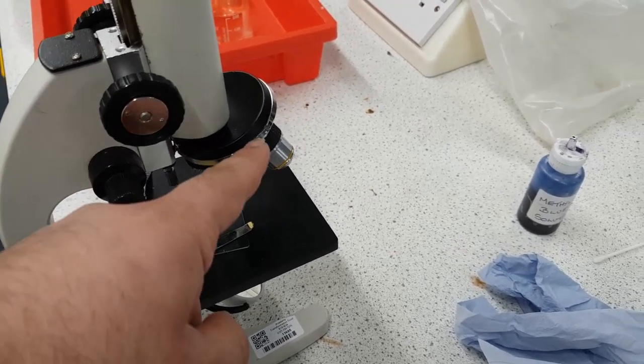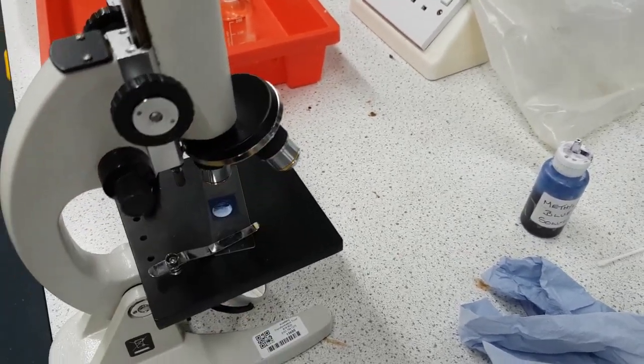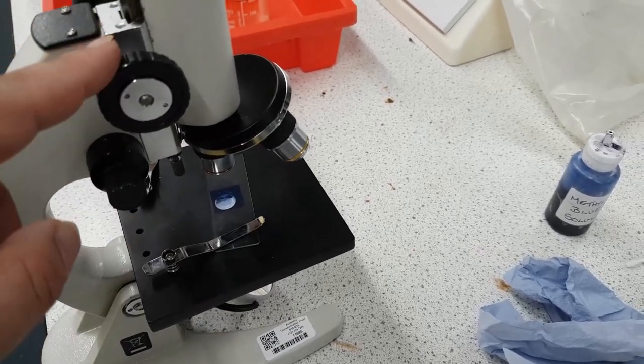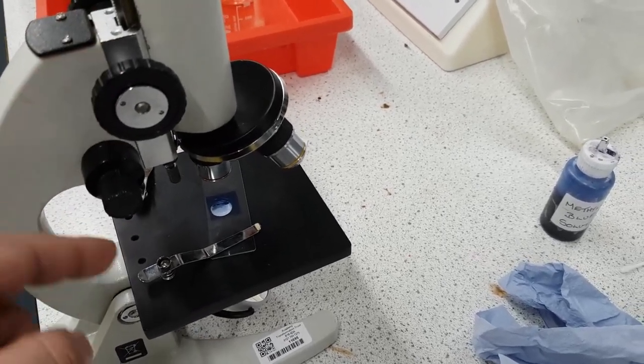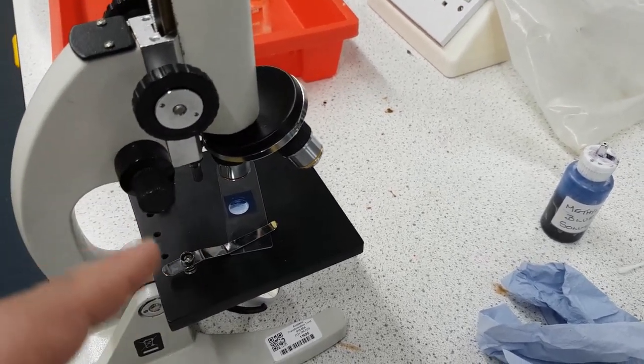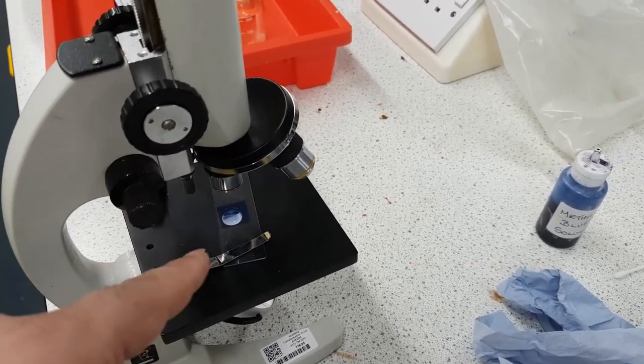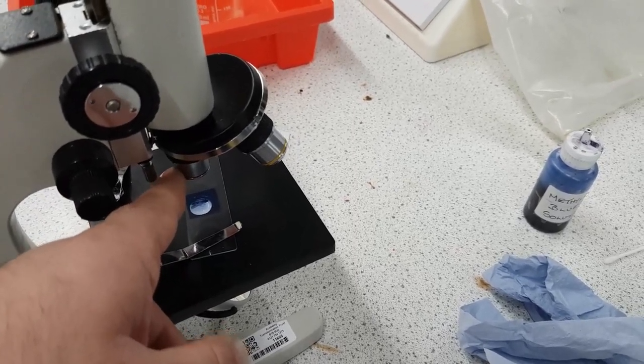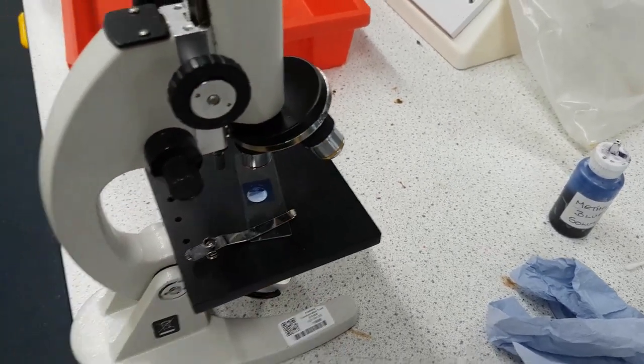And then once you're happy with that then you can move up to the next magnification which is the yellow one. But with that you're going to not use the coarse knobs because they won't work so well, you're going to use the fine knobs and you might find that you even have to reset it all the way from the beginning. But you want the large field of view first and then followed by that and that is the microscope experiment done.